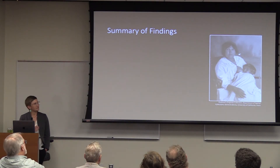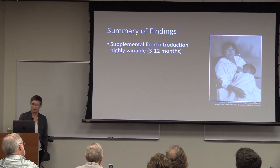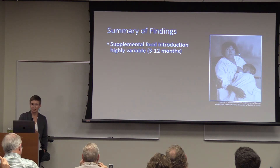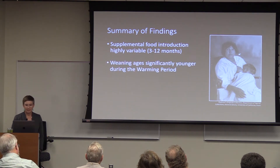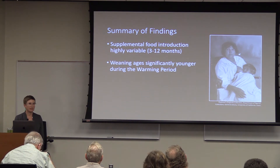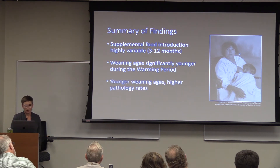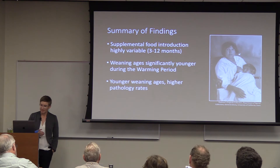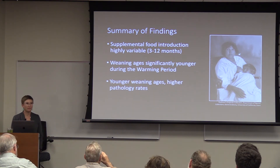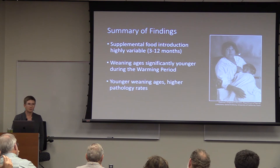To summarize my findings from ancient California: there's high variability in the timing of introduction of supplemental foods, anywhere from 3 to 12 months, but on average slightly older than WHO recommends. Weaning ages are significantly younger during the warming period — during this stressful time when extrinsic mortality is higher, women are weaning children at younger ages. With younger weaning ages, we see higher pathology rates, suggesting there are health benefits to receiving breast milk past 24 months, which is what the WHO recommends.